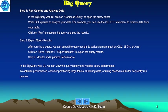Then run queries and analyze your data. In the BigQuery web UI, click Compose Query to open the query editor. Write SQL — structured query language — queries to analyze your data. For example, you can use the SELECT statement to retrieve data from your table. Click Run to execute the query and see the results.